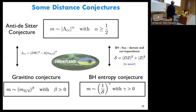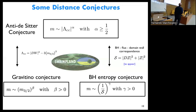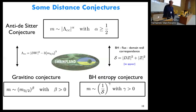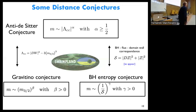There is also a very nice correspondence between flux vacua in string theory and black hole solutions — the so-called black hole flux domain wall correspondence. One can see formally that the entropy of certain black holes is given in terms of the central charge. Comparing these equations, they look very similar, and therefore there is a relation between the AdS distance conjecture and the black hole connection. We will explain this in more detail in an upcoming paper, which will hopefully appear soon.